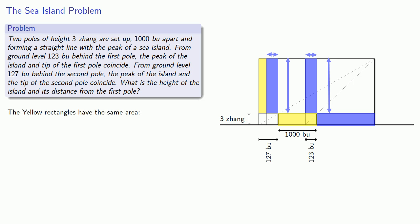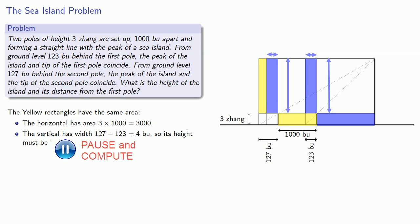So the yellows have to have the same area, and the horizontal yellow has area 3 by 1000 or 3000. Meanwhile, the vertical, well the width is the last part of this 127 bu length. That's 127 minus 123, or 4. So we know the width, and that means we know what the height is. And that gives us the height and width of the vertical blue rectangles.